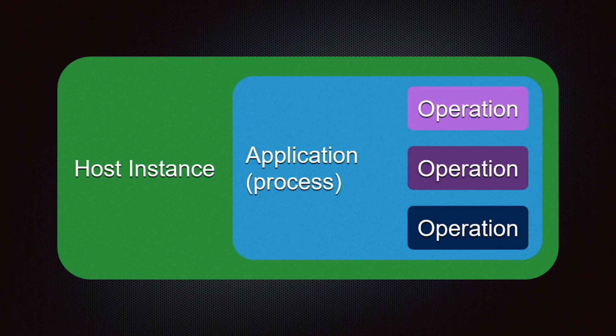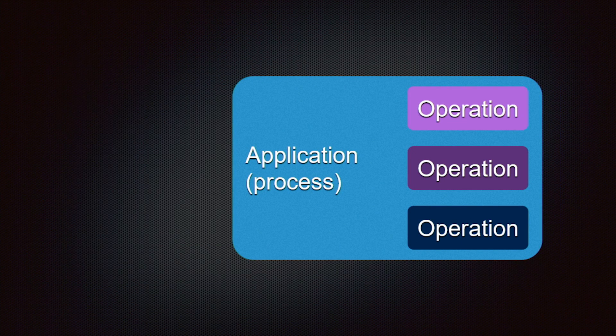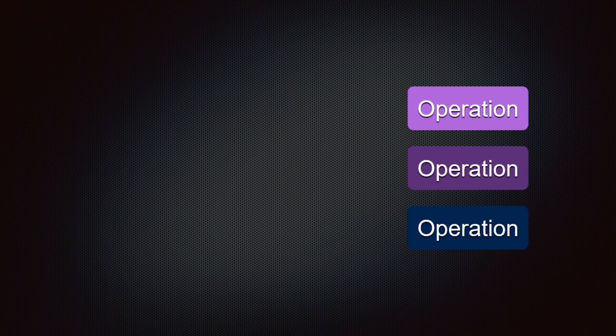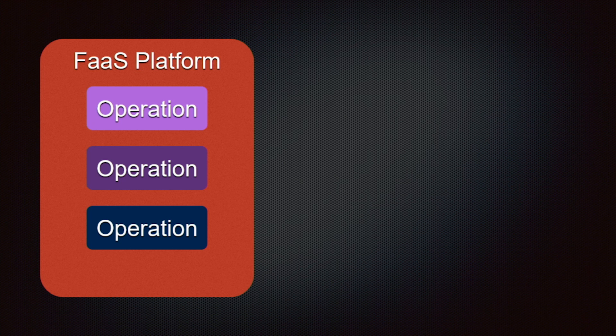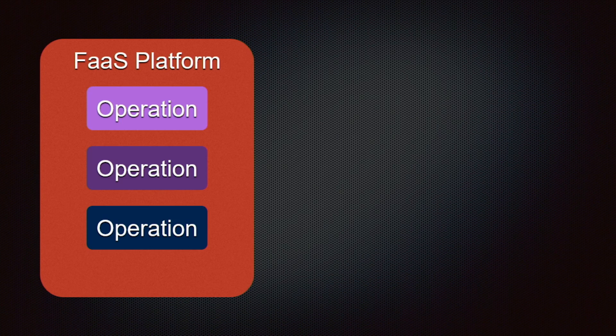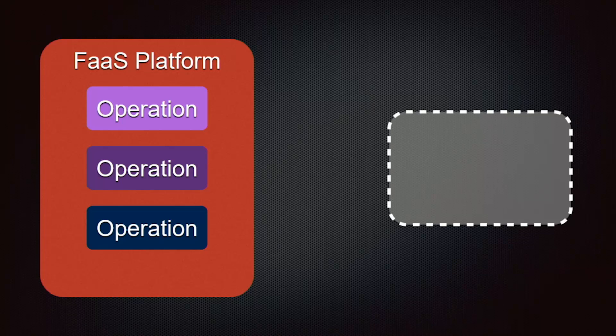FaaS — functions-as-a-service — changes this type of deployment. We strip away both the host instance and the application process from our model, and instead just focus on the operations or functions that express our application's logic. Instead of a host, we have the concept of a vendor FaaS platform. We deploy these functions to the FaaS platform as very basic code units — think a JAR for JVM, or just plain source code for JavaScript. These individual functions are not constantly active in a server process sitting idle until they need to be run, as they would be in a traditional app. Instead, the FaaS platform is configured for each operation to listen for a specific event. When that event occurs, the vendor platform transparently creates an ephemeral container for a function on demand and executes the function within that container, passing it a representation of the triggering event.